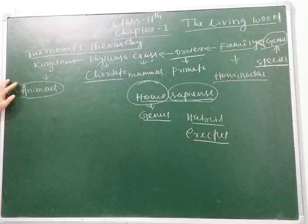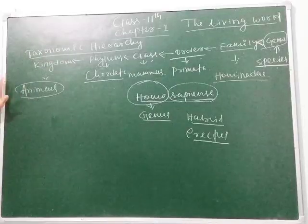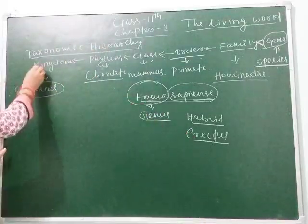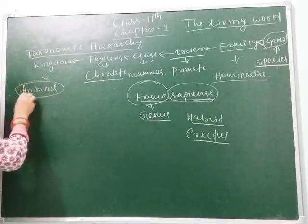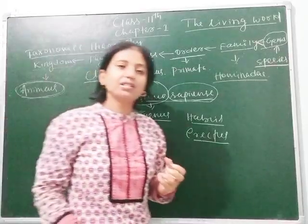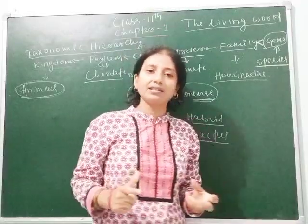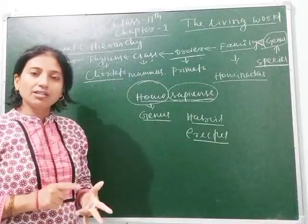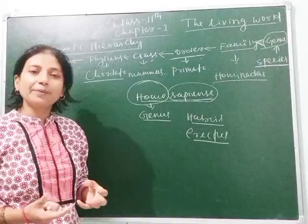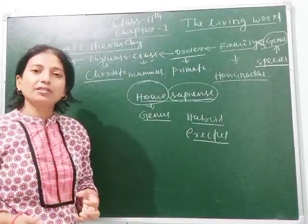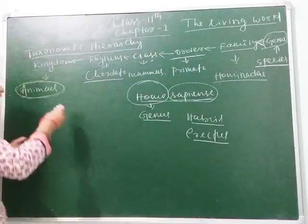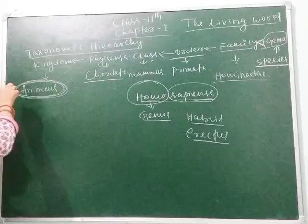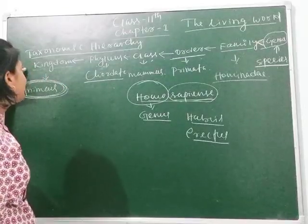I want to elaborate further. We come under kingdom Animalia — not only we, but also various types of animals on earth, including cat, dog, snake, fish, all reptiles, all mammals, all arthropods. All these are placed under kingdom Animalia because they are animals and have the character to move.